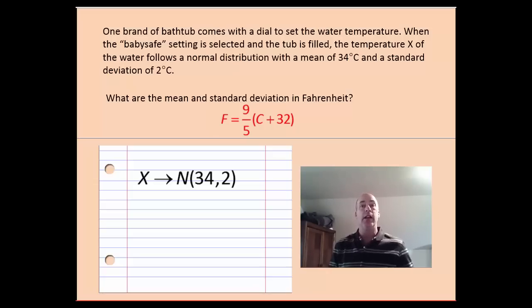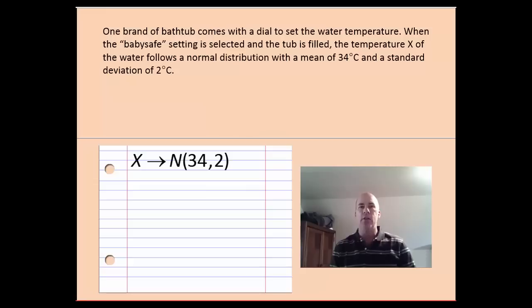So keep in mind that two things are occurring here. We're taking a distribution, adding 32 to it, and then multiplying the result by 9 fifths. Back in previous chapters, we saw that when you add a number to a distribution, it influences the mean but not the standard deviation. And when you multiply a distribution by a number like 9 fifths, the standard deviation and the mean are both affected by that multiplication. So we're going to use those facts now to come up with two different rules.